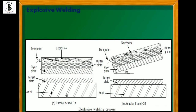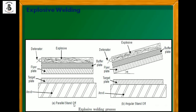The explosive welding process is utilized to make a joint on large size sheet metals. Two kinds of setups are used. The first is known as a parallel standoff, in which an anvil provides support to a target plate. The flyer plate is placed parallel to the target plate and is connected with a buffer plate, explosive, and detonator. This arrangement is known as a parallel standoff.